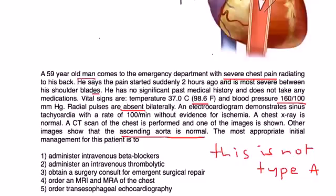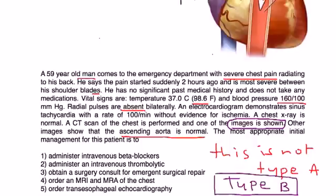So, this vignette actually had an image, but I couldn't fit it in. But it did show that there was a dissection in the descending aorta. So what that means is that this is a type B aortic dissection.